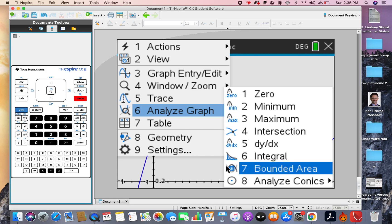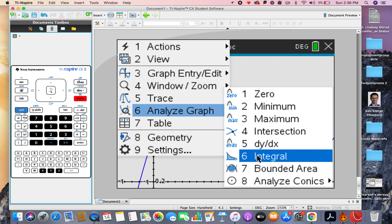So this number 6 option works out the area between a curve and the x-axis. You can see option 7 here has a bounded area, now this might come in useful later, this will find the area between two different curves. Can you see the picture? We're going to use number 6 for now, the integral.